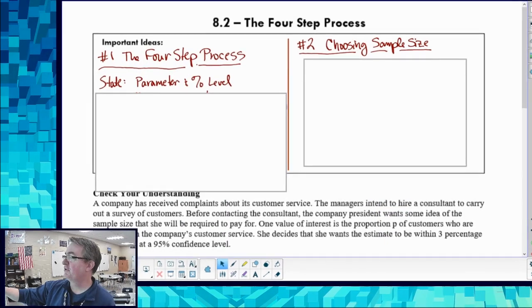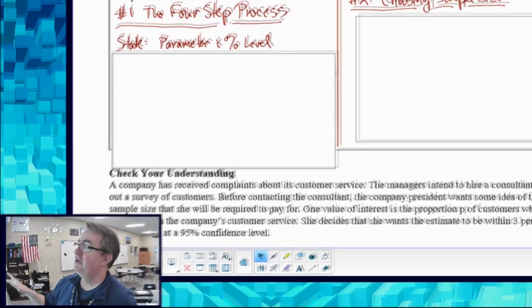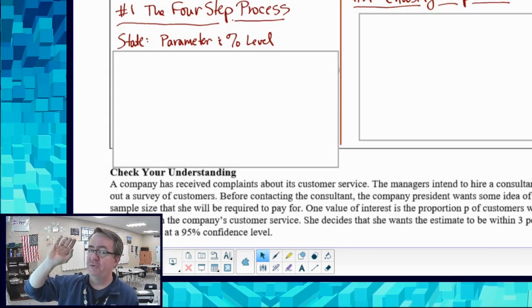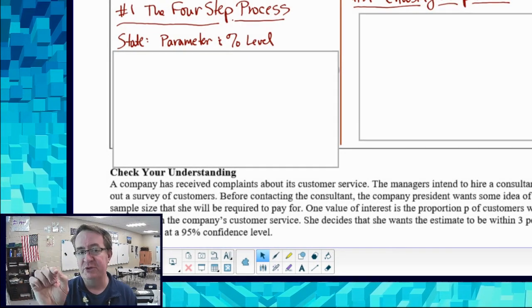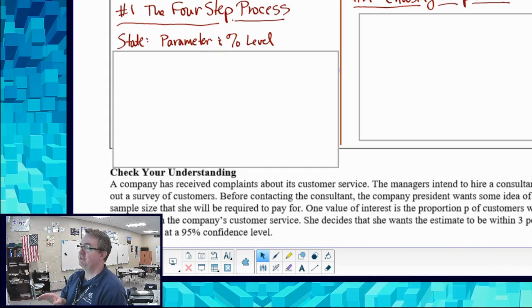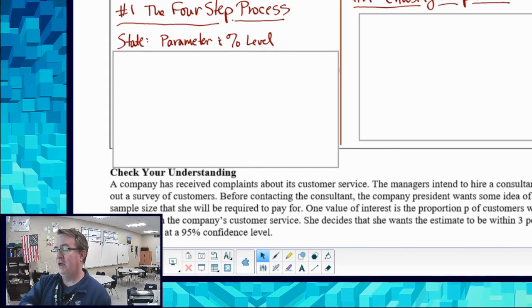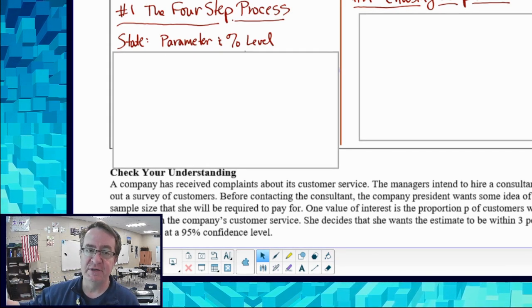So the four steps that we went through in the previous lesson - the link to that's below - the first step is state. You need to say what you're trying to find and how confident you want to be. So in this case here, you would say I'm trying to find P, the true proportion of blank, and we're going to be doing it to a 95% confidence level.